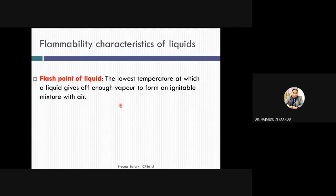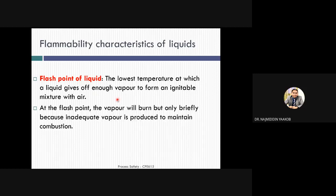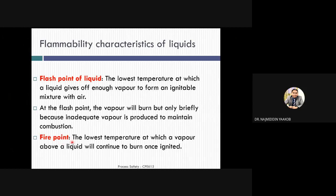These are the flammability characteristics of liquids. Number one is flashpoint. What is flashpoint? It is the lowest temperature at which a liquid gives off enough vapor to form an ignitable mixture in air. The keywords are: the lowest temperature and enough vapor. At the flashpoint, the vapor will burn out only briefly because inadequate vapor is produced to maintain combustion. Fire point is the lowest temperature at which vapor above a liquid will burn once ignited.